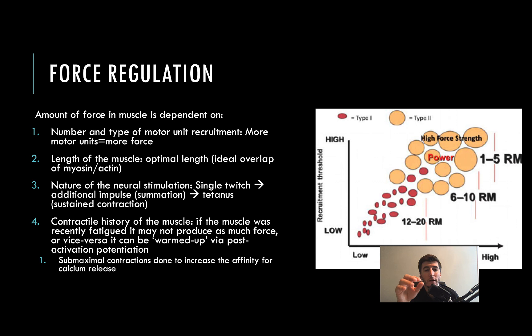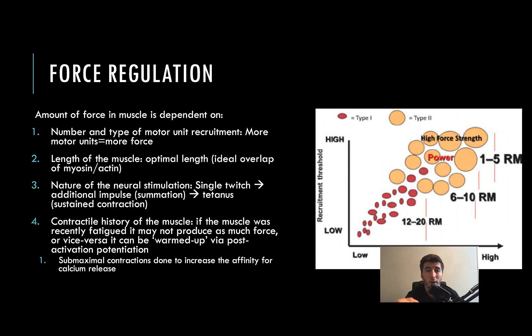The contractile history of a muscle fiber matters. If you're fresh and draw a 70-pound bow, it will be easier than if you'd drawn it a hundred times that day because fatigue accumulates. But you can actually warm up and increase the ability of that muscle to exert force through post-activation potentiation — sub-maximal effort contractions that increase the affinity for calcium release.